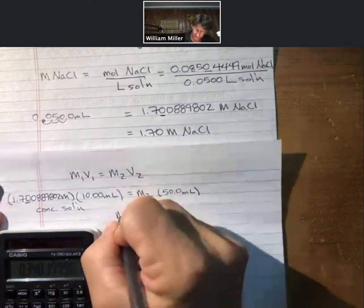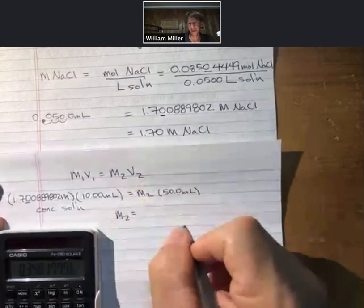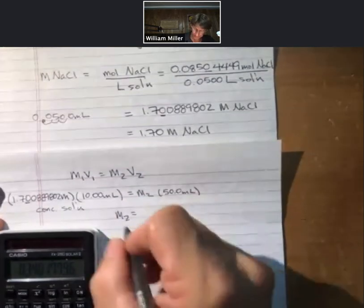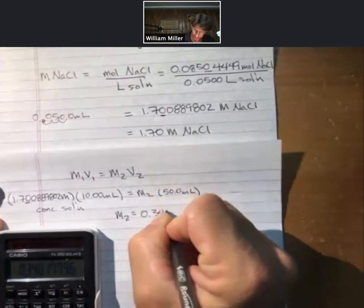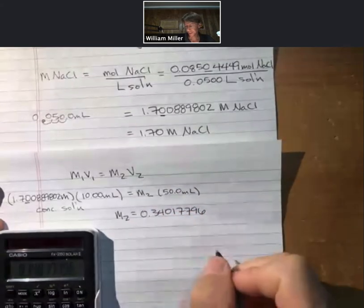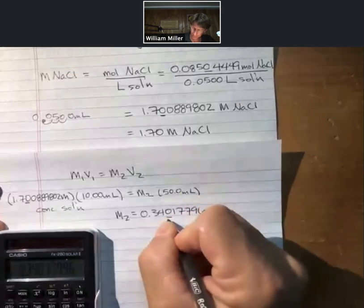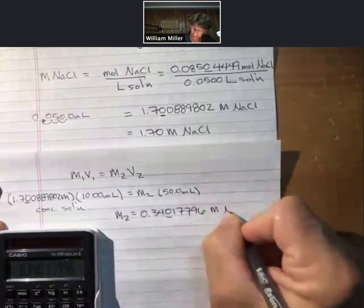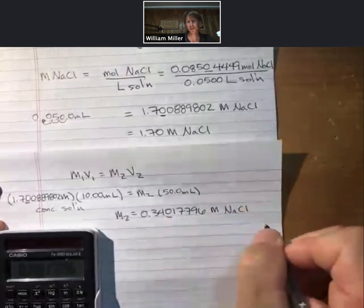And I get that M2, which is the molarity of our more dilute solution, 0.340177896. Again, two three sig figs, molarity sodium chloride.